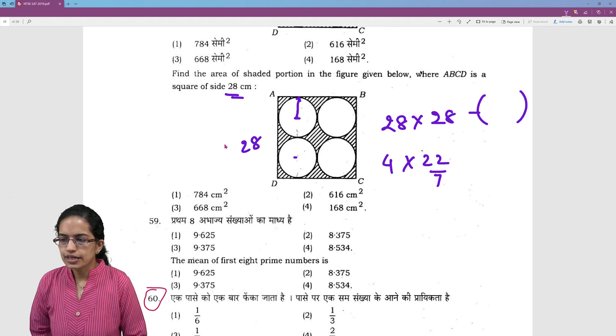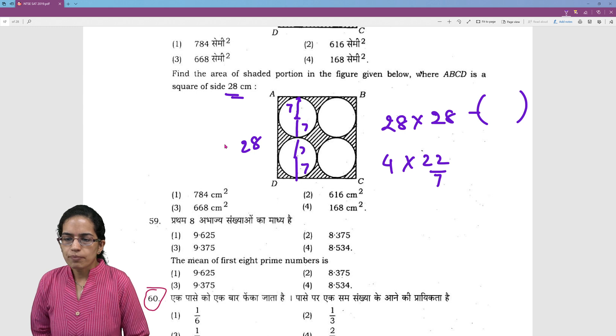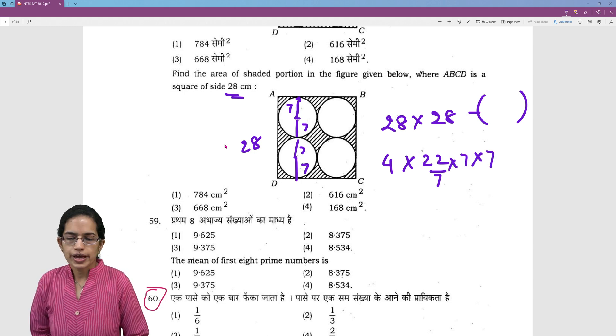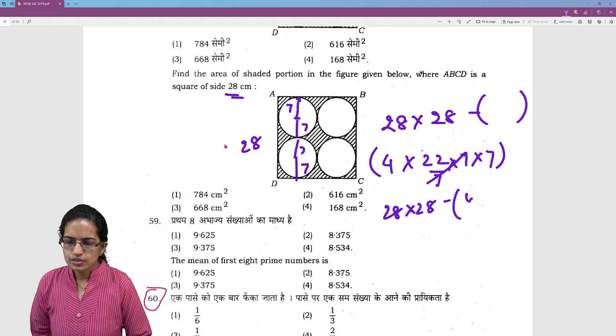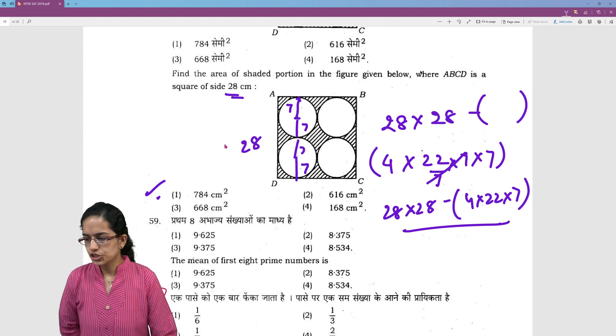This whole side is 28. I have to fragment it into four pieces. So 7 becomes the radius. So this is 7. This again is 7. This is 7 and this is 7. So my radius is 7. So 7 into 7. So pi r square. I cancel it out and I have this. So 28 into 28 minus 4 into 22 into 7 and that would give me the area of the remaining shaded portion.